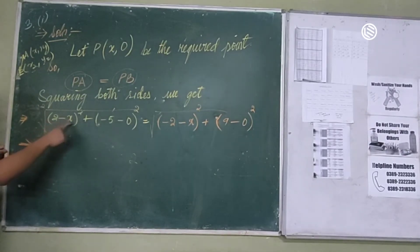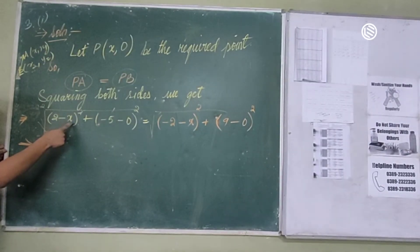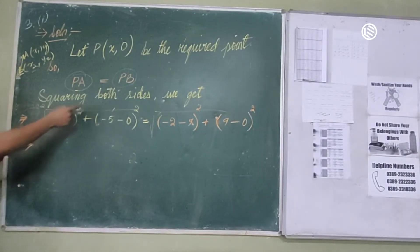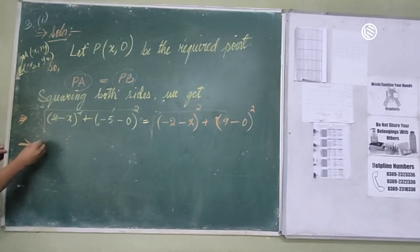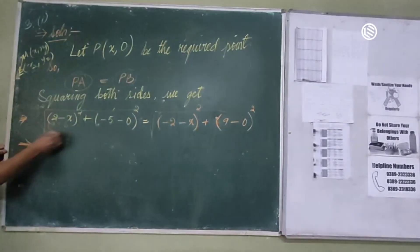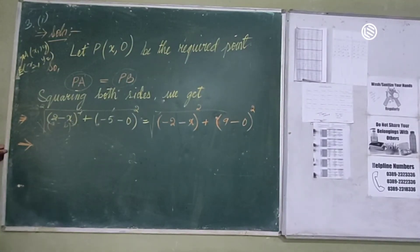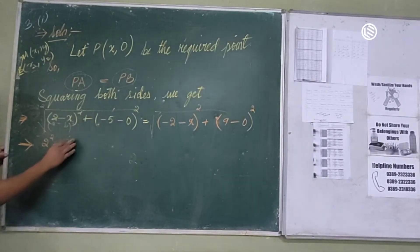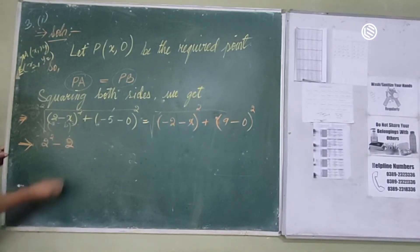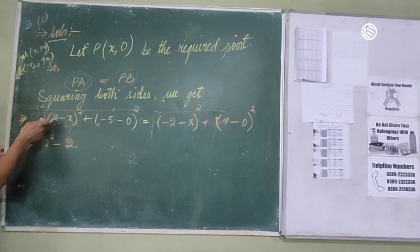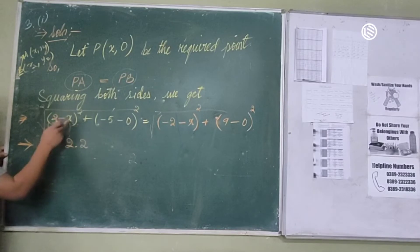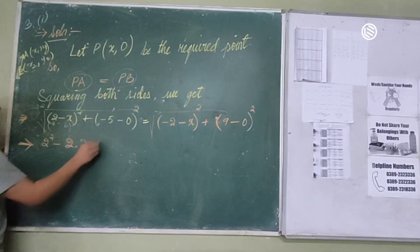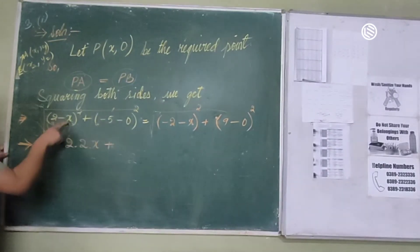2 minus x, holding square. Using the (a minus b) holding square formula: a² minus 2ab plus b². Two a squared minus two a b — two times 2a to b2x plus b squared.